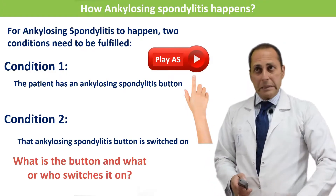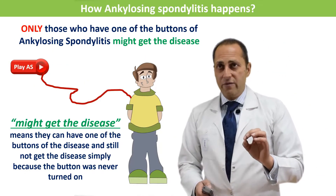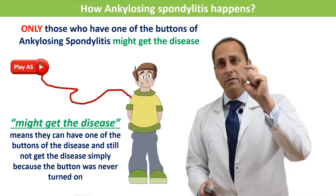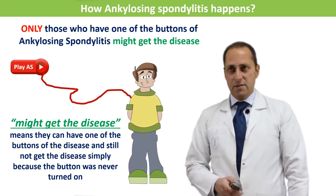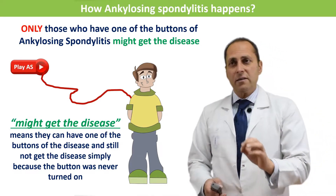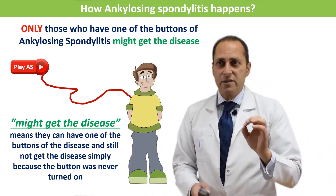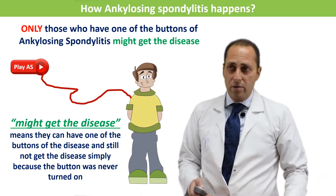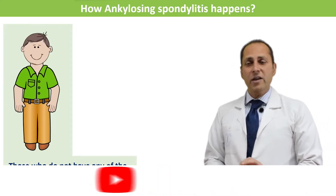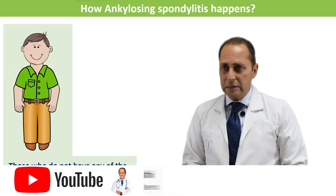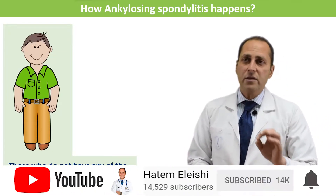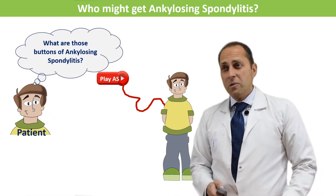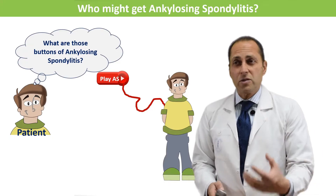Only those who have one of the buttons of ankylosing spondylitis might get the disease. Having one of the buttons and still not getting the disease is possible, simply because the button was never turned on. Those who do not have any of the buttons of ankylosing spondylitis will never get the disease. So a patient might ask: what are those buttons?